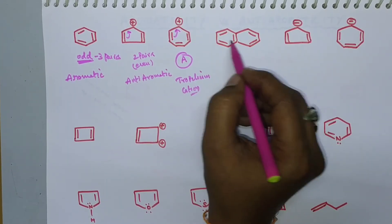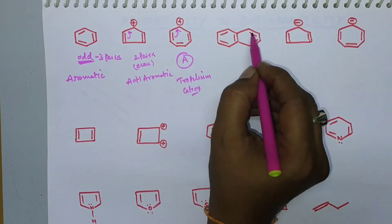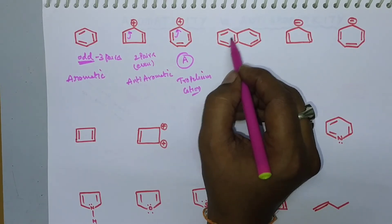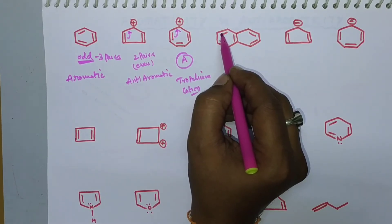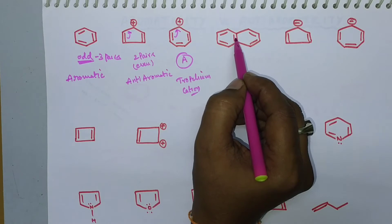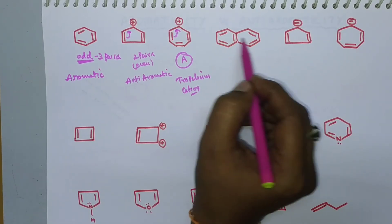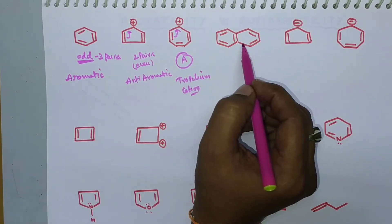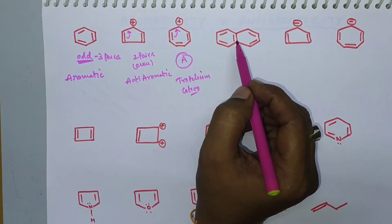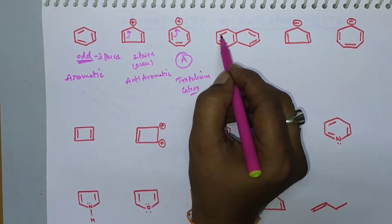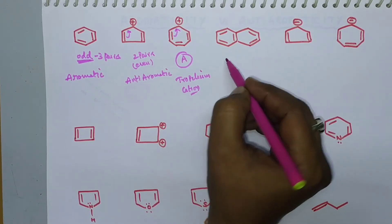Naphthalene consists of five π bonds — double bond, single bond, double bond, alternating — so there is conjugation throughout. It involves in resonance structures and consists of five bonds, which is an odd number of pairs, making it an aromatic molecule.